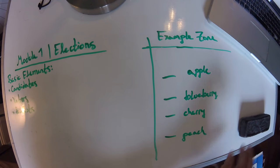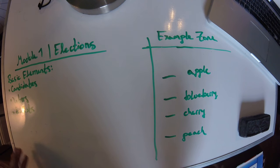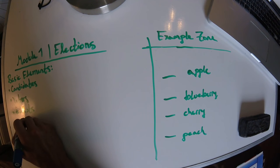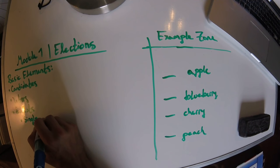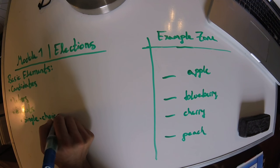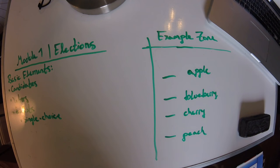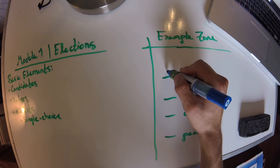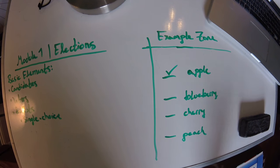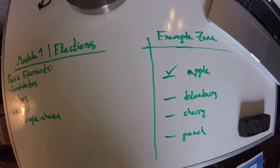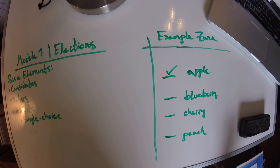We can have multiple different types of ballots. The first would just be a single-choice ballot — this is if you only choose your favorite and nothing else matters. So if I like apple pie the best, I would just give it a check, mark that space somehow, give no other information, and that would be a single-choice ballot.